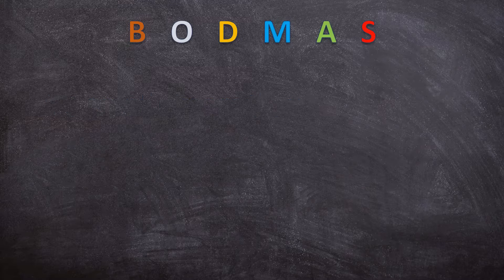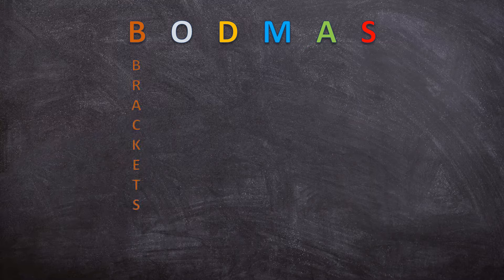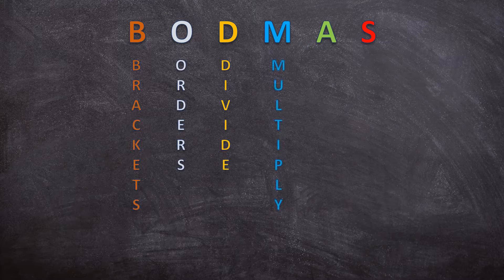When doing operations, I like to use BOTMAS to help guide me in knowing which order to complete the operations. So what does BOTMAS stand for? B is for brackets, O for orders, D for divide, M for multiply, A for add, and S for subtract. This will be the order in which you complete operations.